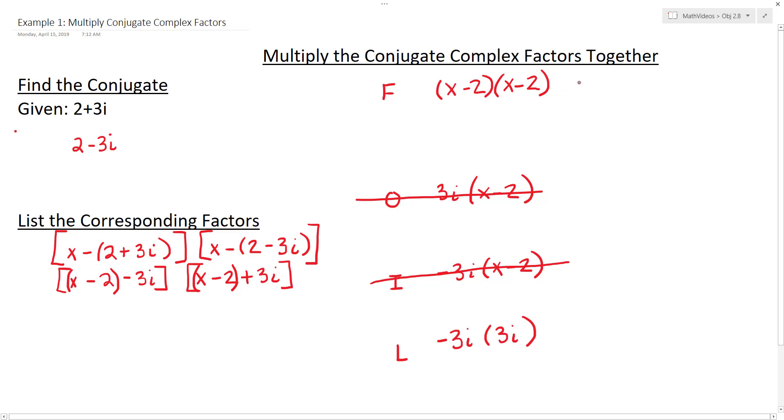And so all we have to worry about is the first and the last. So if I go to do the first piece, I kind of have to FOIL within this piece as well. So the first would be x squared. The outside would be minus 2x. The inside would also be minus 2x. And last would be positive 4. So that simplifies down to x squared minus 4x, when you combine like terms, plus 4.